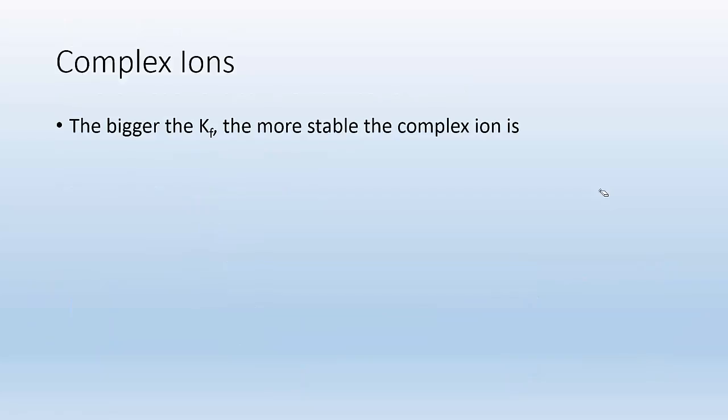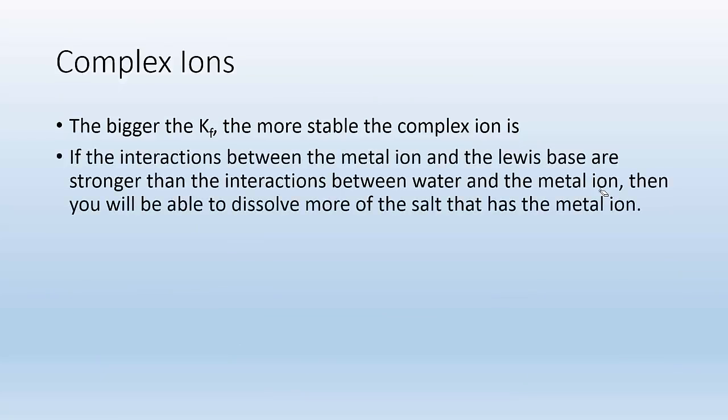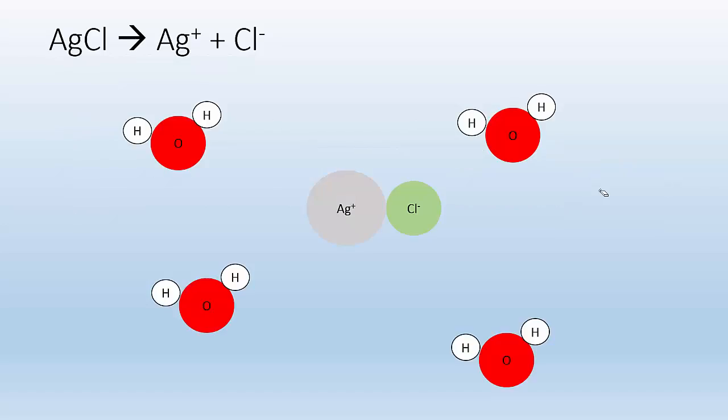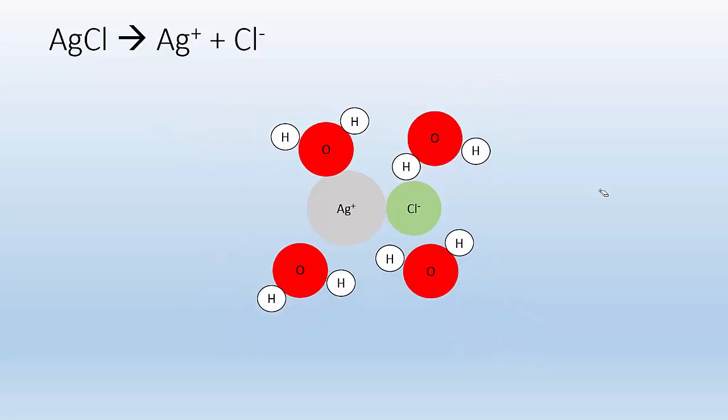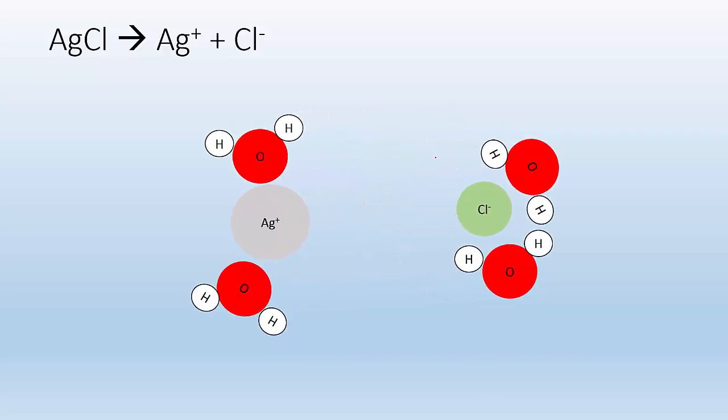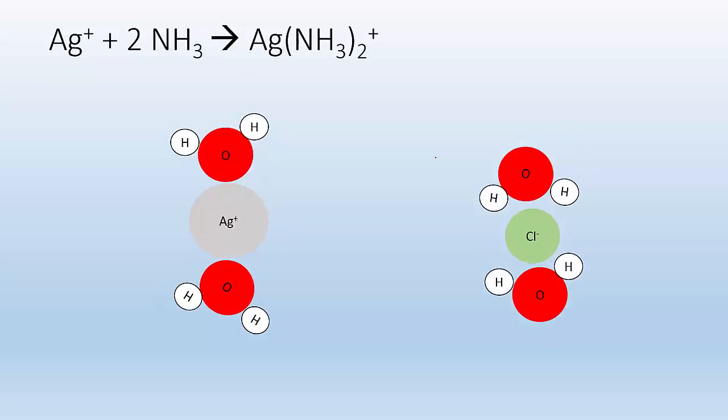So the bigger the KF, the more stable the complex ion is. Now, the way complex ions affect solubility is because if the interactions between the metal ion and the Lewis base are stronger than the interactions between water and the metal ion, then you'll be able to dissolve more salt that has the metal ion in it. So let's take a look. So if I got AgCl, right, and I'm going to dissolve it into water, what's going to happen is the water is going to be attracted to the Ag+ ion and the chloride ion. Now, the negative ends of the water are going to be attracted to the positive ion, and the positive ends of the water are going to be attracted to the negative ion.